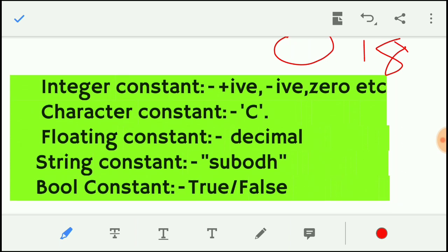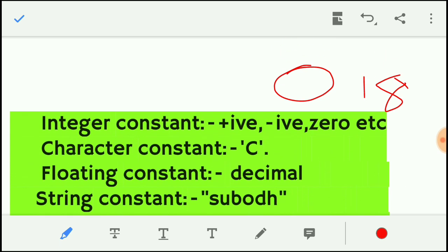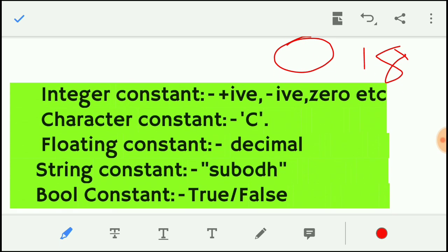Second number is character constant. Character constant means that it is single code, like this.